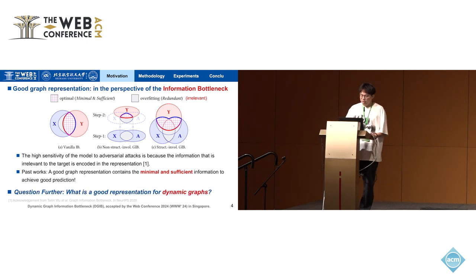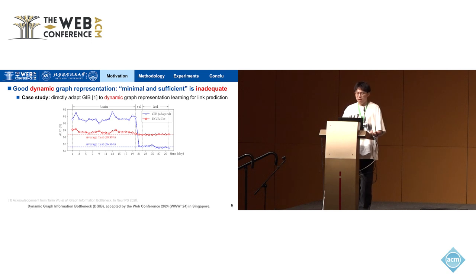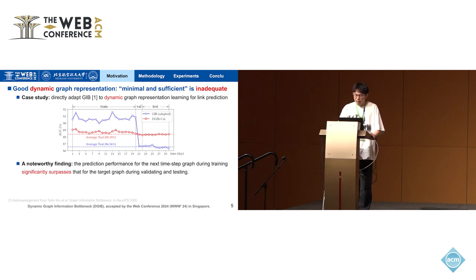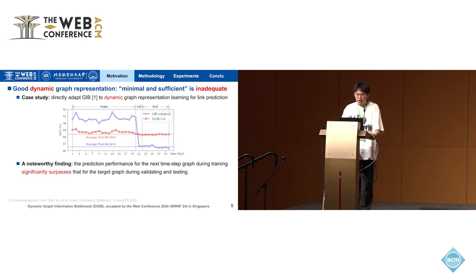Let's push the key question further: what is a good graph representation for a dynamic graph? To test whether the minimal sufficient representation from the static scenario is also good in a dynamic scenario, we do a case study. We directly apply the GIB used for static graphs to dynamic scenarios and test link prediction performance. We find a noteworthy result: prediction performance significantly surpasses validation and testing performance. This shows that GIB better captures spatial-temporal correlations in the training stage. However, due to distribution shifts in the validation and test data, the minimal sufficient information learned in training changes, resulting in a rapid decline in downstream prediction accuracy.